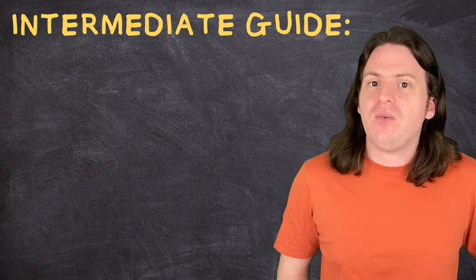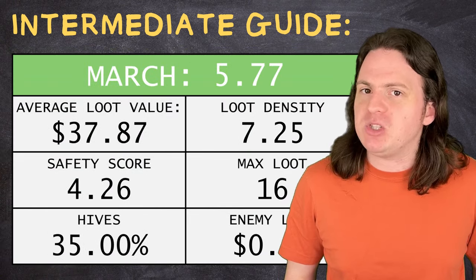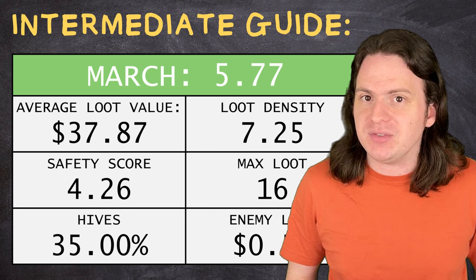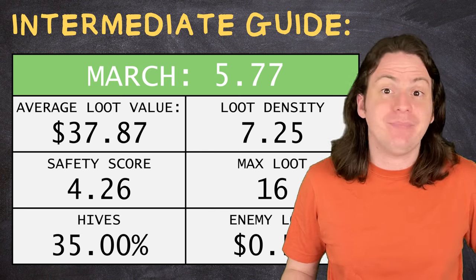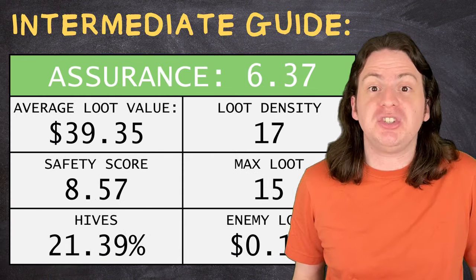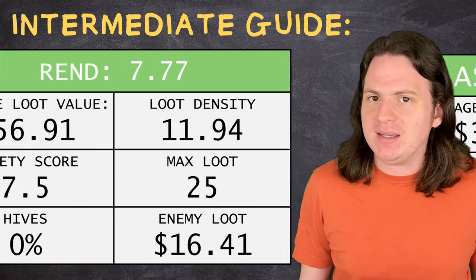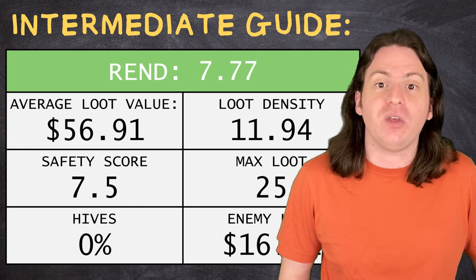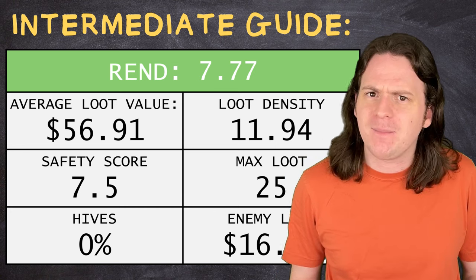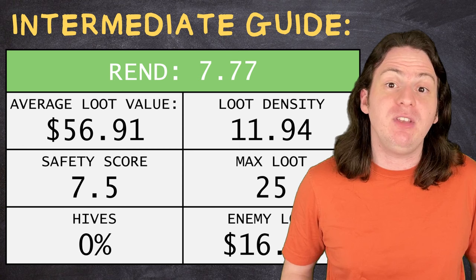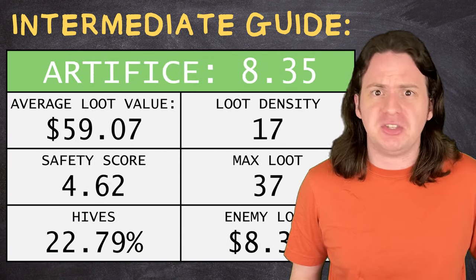For intermediate crews, Vow and March are good options if you want to try and get a couple hives. Or if you're not interested in that, honestly, Assurance is still a very strong option. Once you have enough money, you can go to Rend. It's significantly better than the other free moons, though honestly, you might be better off saving your money to get to Artifice as soon as you can.